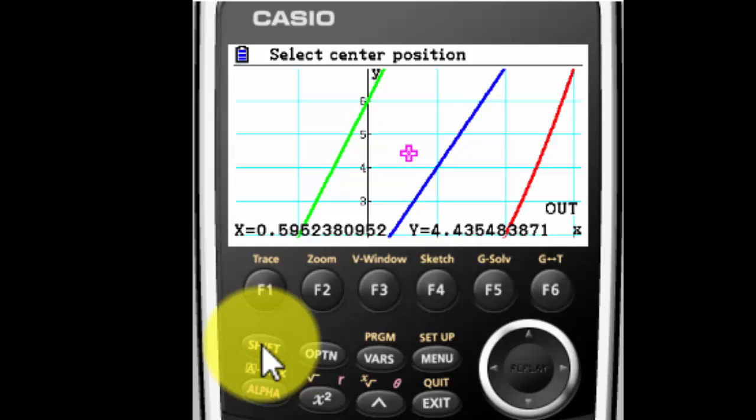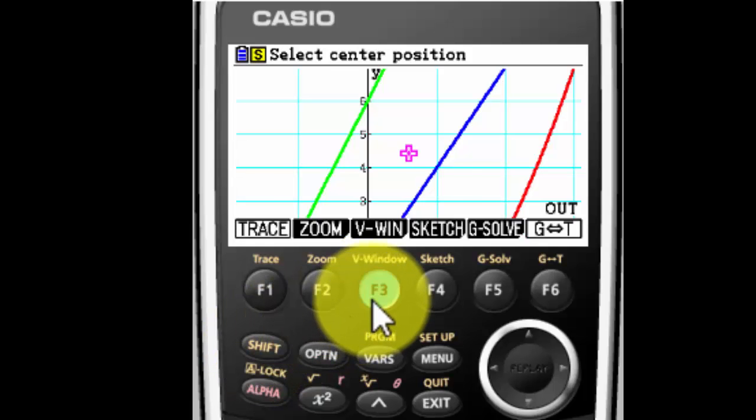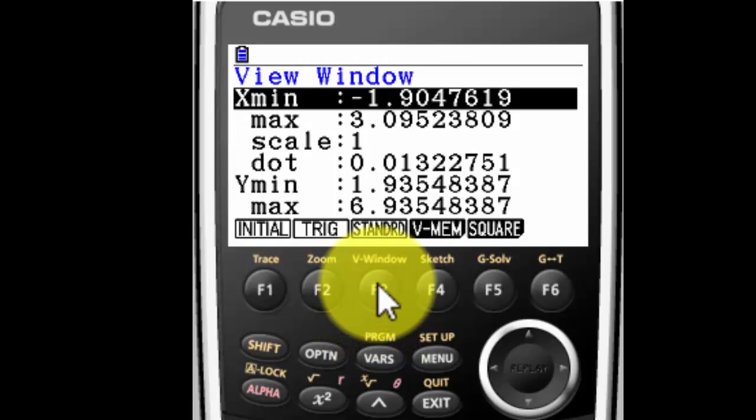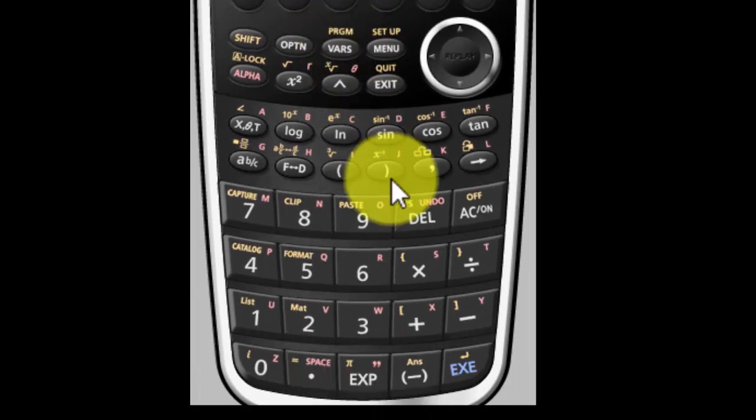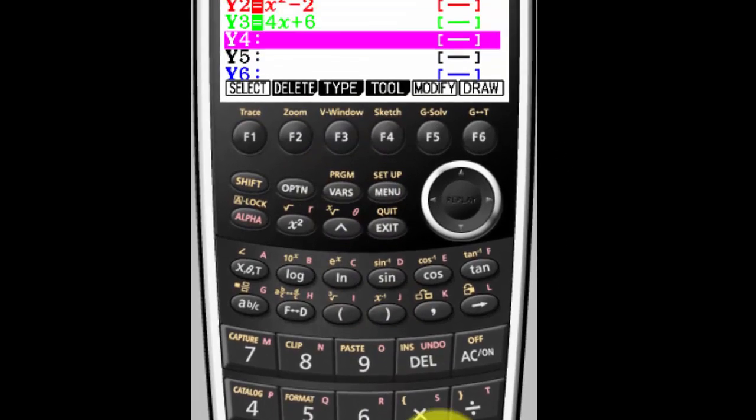Let me change my view window. So I'm going to go to Shift-F3, which is view window. And I'm going to give myself a standard view window, which is negative 10 to 10 on both the x and the y axis. Increments of 1. Execute.